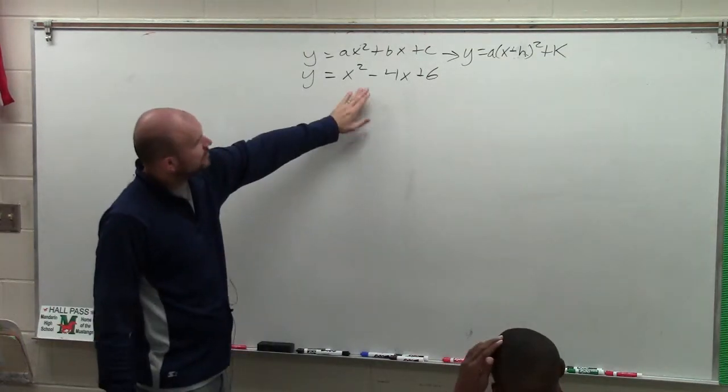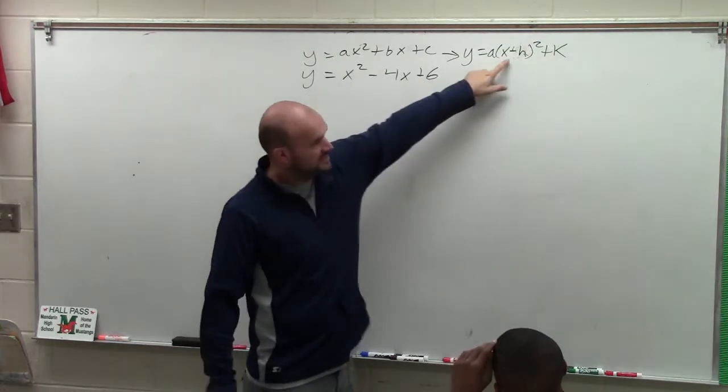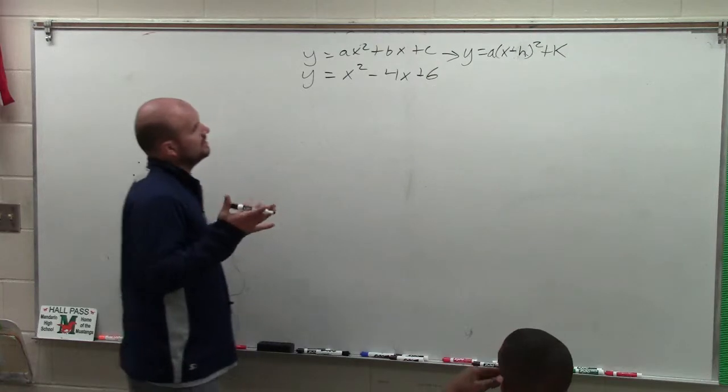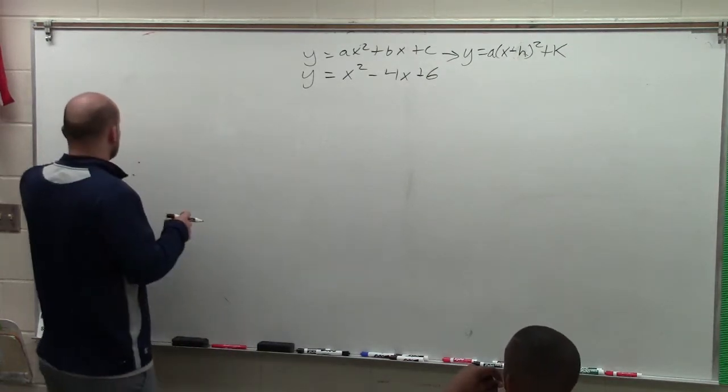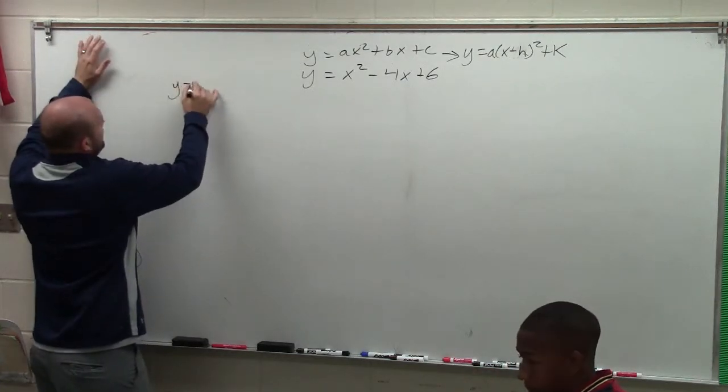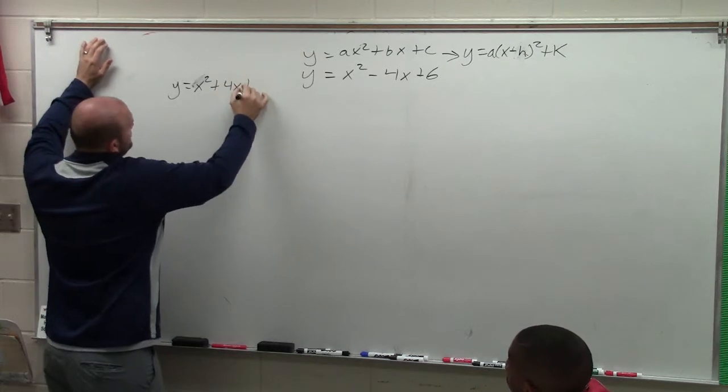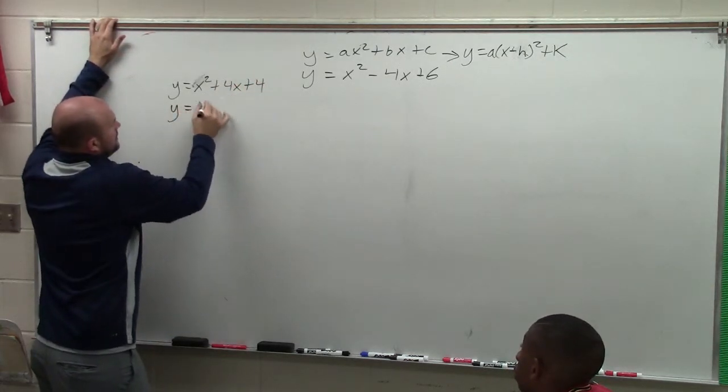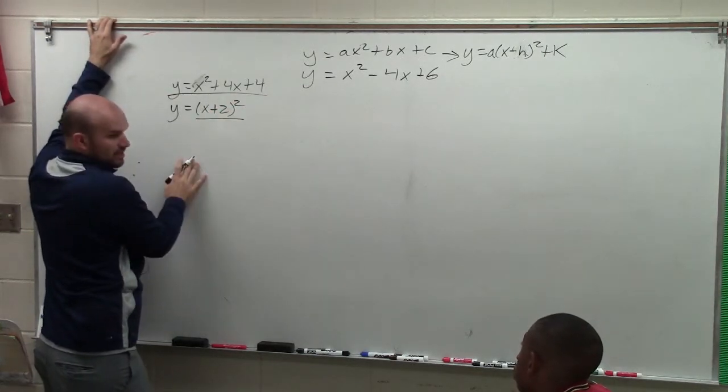So to go ahead and do that, what we need to do is we need to rewrite this as a trinomial. You can see this is a binomial squared. The relationship between a trinomial and a binomial squared is we can always think about this: y equals x² plus 4x plus 4. When we factor this, this is what we call a perfect square trinomial. This is a binomial squared.